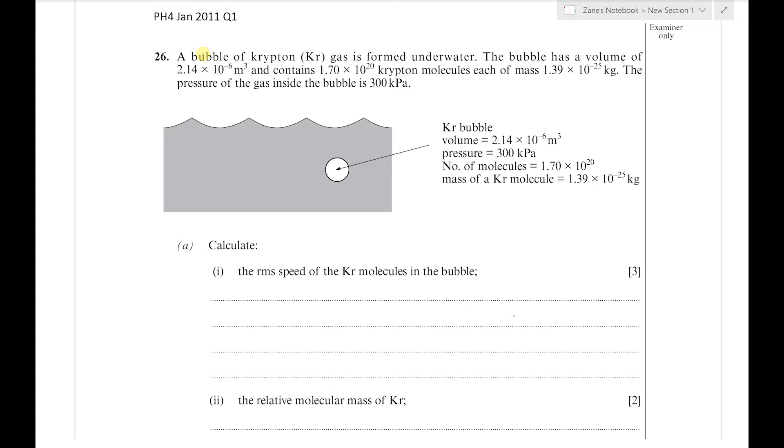We're also given the pressure inside the bubble. First, we're asked to find the root mean square speed of the krypton molecules. We can use p = 1/3 ρc² or p = 1/3 Nmc². They're the same equation, just simplified versions. To find the density, we need the total mass of the gas divided by its volume.